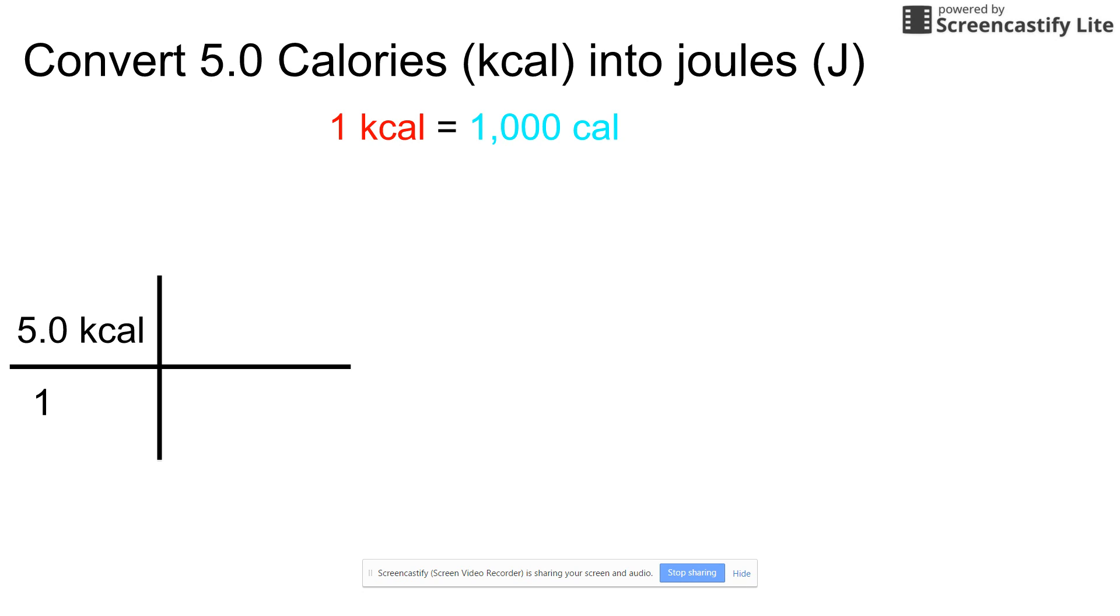Then you have to go from calories to joules. So you have to think how many joules are in 1 calorie. The answer was 1 calorie equals 4.184 joules. So then on the bottom right, you have to pick the side of the equation that has kcal because you want to have the kcals cancel. That part that's in red is 1 kcal, and 1 kcal equals 1,000 calories, which is in blue.